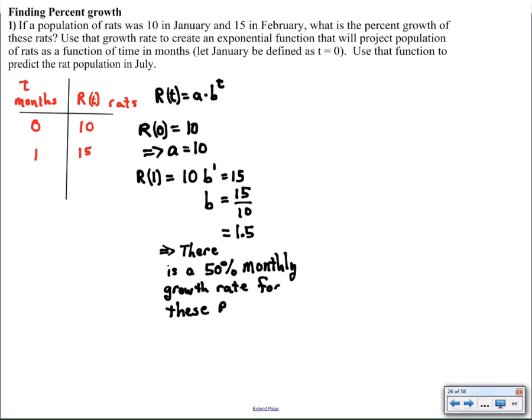The number of rats will increase by 50% every month. And that gives us an equation that we can work with. Now, to keep track between this growth rate and growth factor, we have 50% extra rats plus the 100% rats that were there the month before.